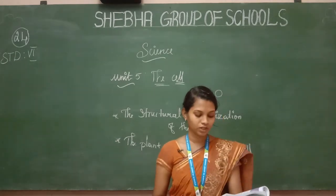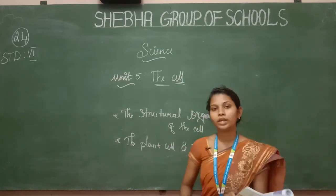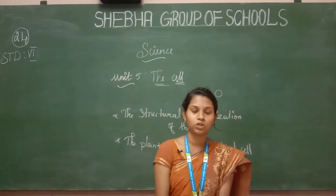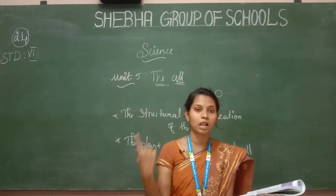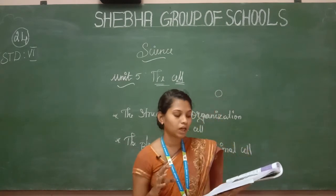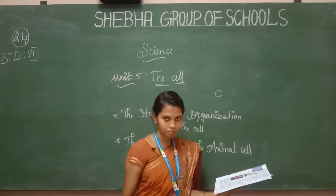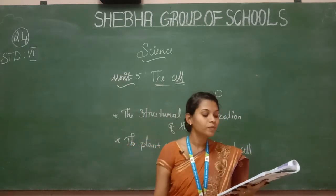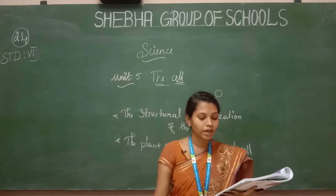The structural organization of the cell: the typical cell consists of three major parts. The outer part is the cell membrane.